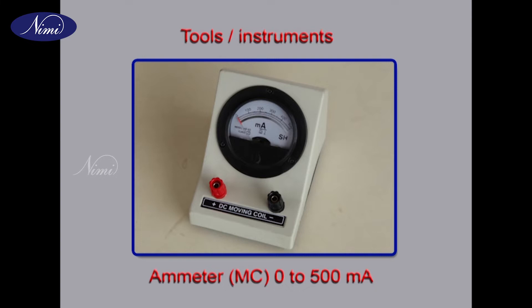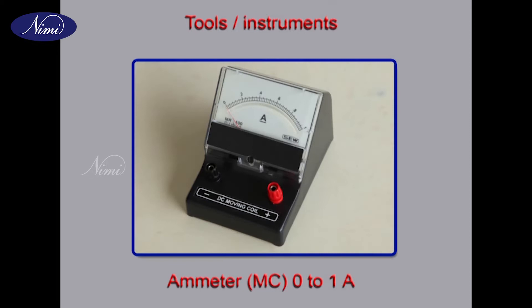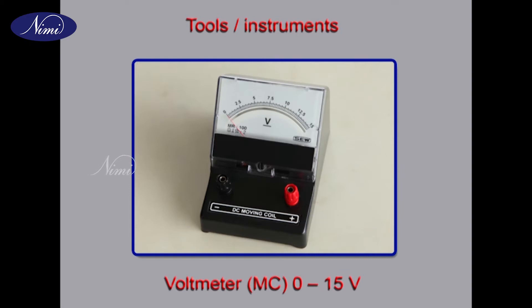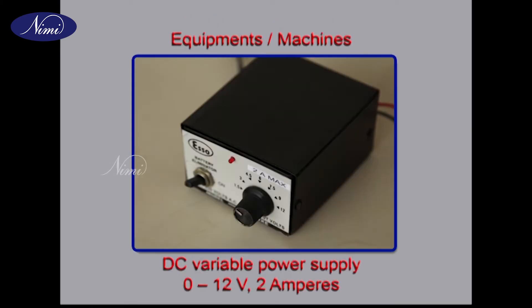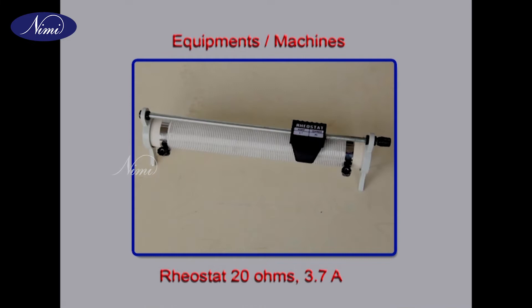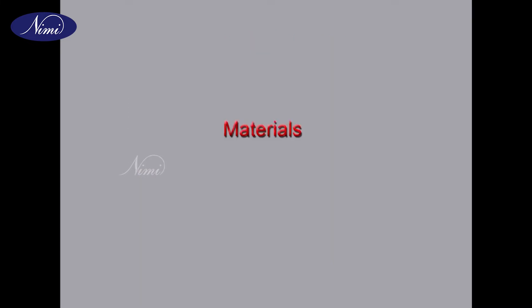Requirements: Tools and instruments - Ammeter MC 0 to 500 milliamps, Ammeter MC 0 to 1 ampere, Voltmeter MC 0 to 15 volts. Equipment and machines - DC variable power supply 0 to 12 volts 2 amperes, Rheostat 20 ohms 3.7 amperes.